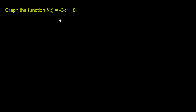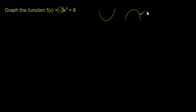Now we can think about whether the parabola is going to open up or open down. Looking at the coefficient on the x squared term — the negative 3 — that tells us this parabola is going to open down. So now we know it's going to be a parabola opening downward. Let's actually graph it.